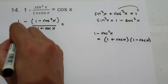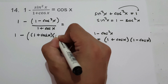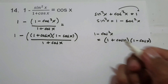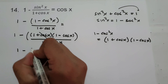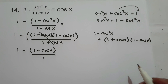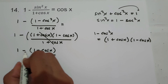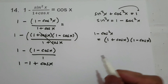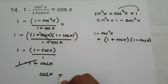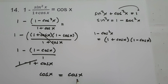So let us rewrite 1 minus the quantity of 1 minus cosine squared x over 1 plus cosine x. If we have 1 minus cosine squared x, it is the same as 1 plus cosine x multiplied by 1 minus cosine x. So let us rewrite 1 minus cosine squared x as 1 plus cosine x times the quantity of 1 minus cosine x. So let's have 1 minus the quantity of 1 plus cosine x times 1 minus cosine x over 1 plus cosine x. Let us cancel this one, and let's have 1 minus the quantity of 1 minus cosine x. Let us distribute the negative sign: negative times 1 is negative 1, negative times negative is positive cosine x. So 1 minus 1, that is 0. Therefore, cosine x is equal to cosine x, and 1 minus sine squared x over 1 plus cosine x is cosine x.